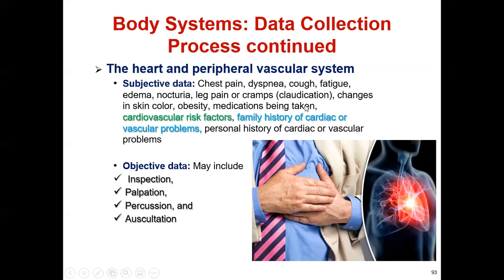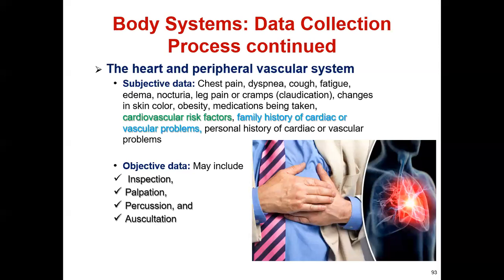If a patient has peripheral vascular disease, they complain that when they walk, pain starts, and when they rest, pain disappears — because of impaired blood supply. Also included in subjective data: changes in skin color, obesity, medication being taken, cardiovascular risk factors, family history of cardiac or vascular problems, and personal history of cardiac or vascular problems.